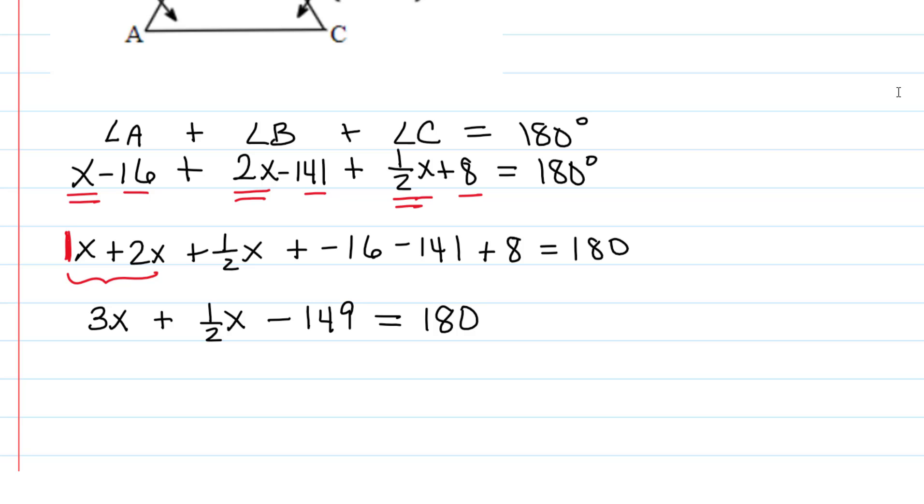Now the next step I'm going to do is to get rid of any fractions that are in my equation by multiplying through by the denominator. So you see how we have a denominator of 2 in the bottom of that fraction? So what we can do is to multiply by 2 on each side of the equation. And watch what happens when we do that. If I distribute the 2 on the left, you have to distribute it to each term. This is called the distributive property.